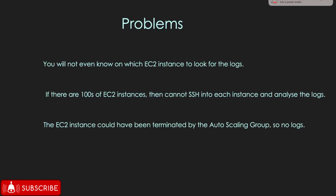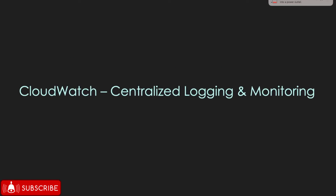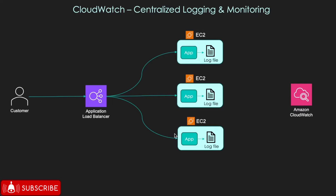A very common pattern used across the industry is called centralized logging and monitoring. And that's where CloudWatch helps us with this problem statement. As part of centralized logging, what you want is these log files to be copied from the individual EC2 instances to a centralized location, and that centralized location or service is CloudWatch.